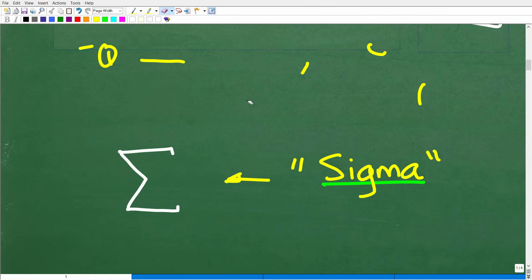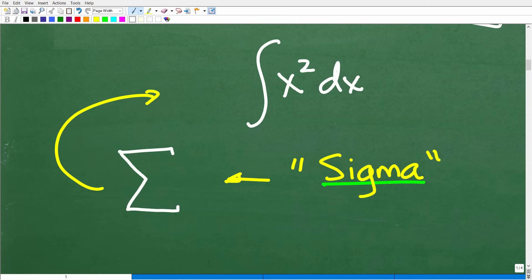Matter of fact, this symbol, this summation symbol or this sigma notation is very relevant to calculus. It's very relevant to this symbol right here called an elongated s. So you might be familiar with calculus, or at least the way it looks. This is what we call an integral.